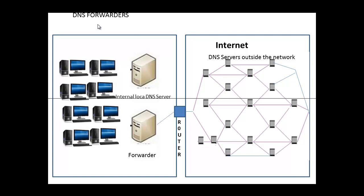Let's start with DNS forwarders. In our network, we have client computers, a local DNS server, and another DNS server configured as a forwarder. When the user makes a query for a host name that is a computer within the network, that query goes to your internal local DNS server. If that DNS server has the host name or IP address of the client machine, it will resolve that name.